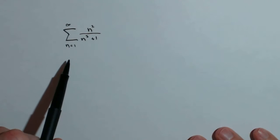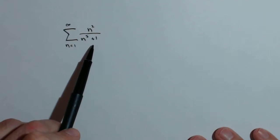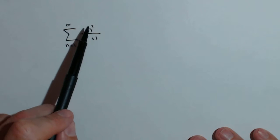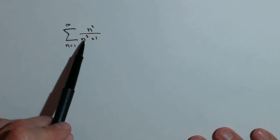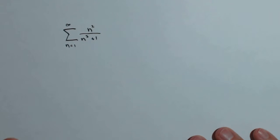So we need to determine the convergence or divergence of the following series. And you may recognize, you may say, oh well, look, n squared over n cubed, it's 1 over n, so it diverges.